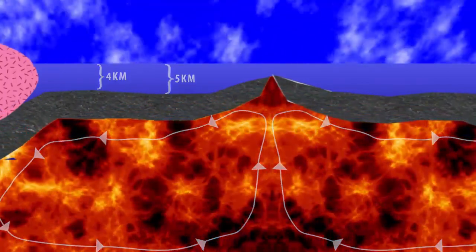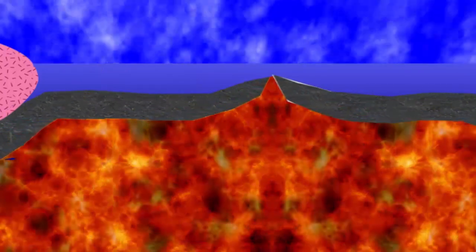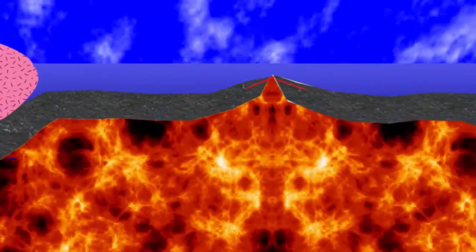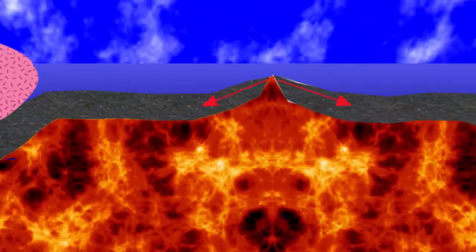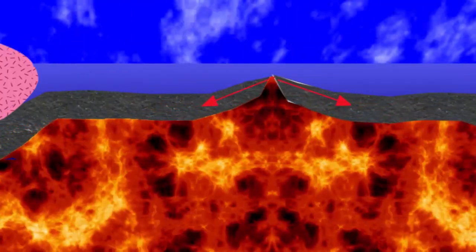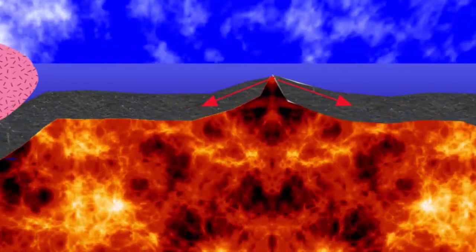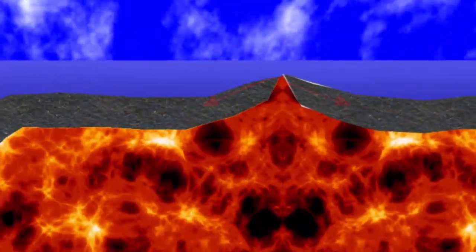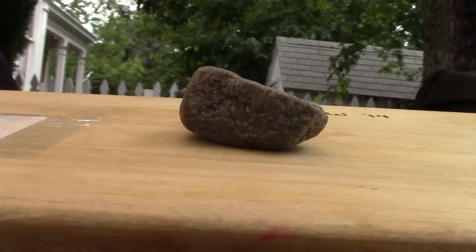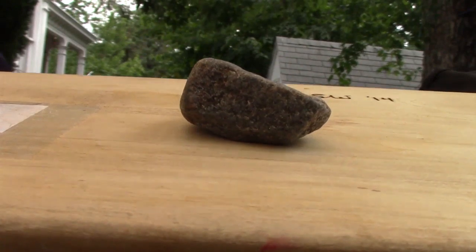Because ridges maintain these sloped flanks, dipping away from their center, a second driving force can be brought into play — that being the fundamental force of gravity.